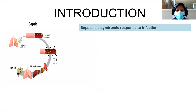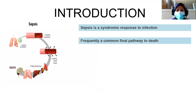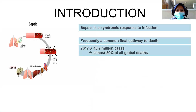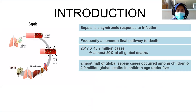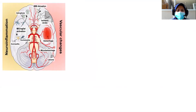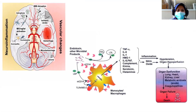As we know, sepsis is a syndromic response to infection and is frequently a common final pathway to death. In 2017, there were 48.9 million cases, causing almost 20% of all global deaths. Almost half of global sepsis cases occurred among children, with about 2.9 million global deaths in children aged under five.